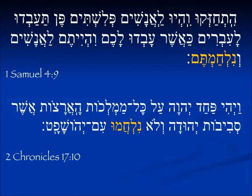In 2nd Chronicles 17, Jehoshaphat is a king. Interestingly it says that his heart was devoted to the ways of Yahweh. He removed the high places and was teaching the book of the law all around the towns of Judah. And then in verse 10 it says the fear of Yahweh fell on all the kingdoms of the land and so they did not fight with Jehoshaphat — lo nilchamu.